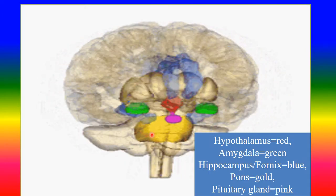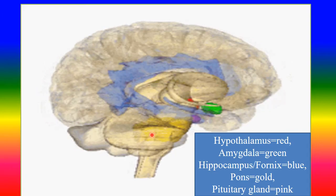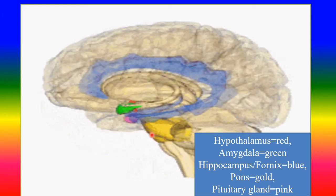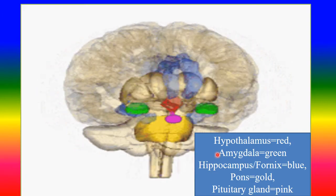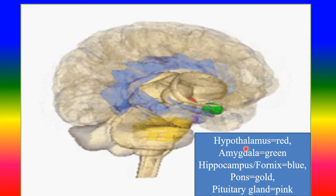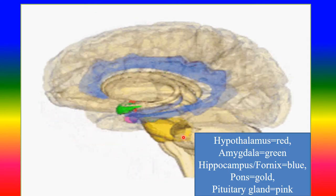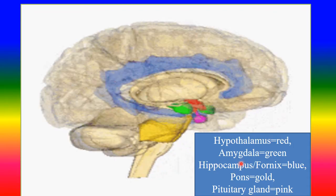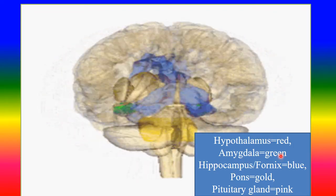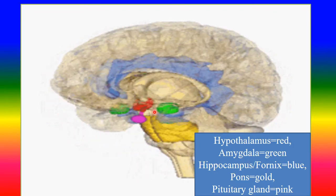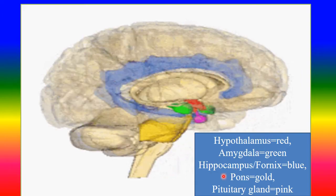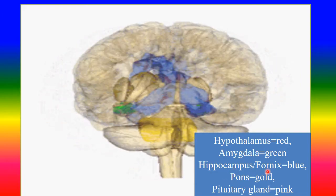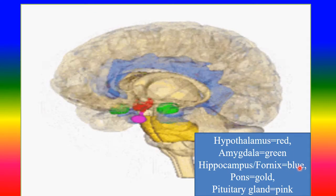Look at this picture. The brain, parts of brain involved in stress. Hypothalamus - look at this, red in color. Amygdala - green in color, look at this green. Hippocampus and fornix in blue in color.